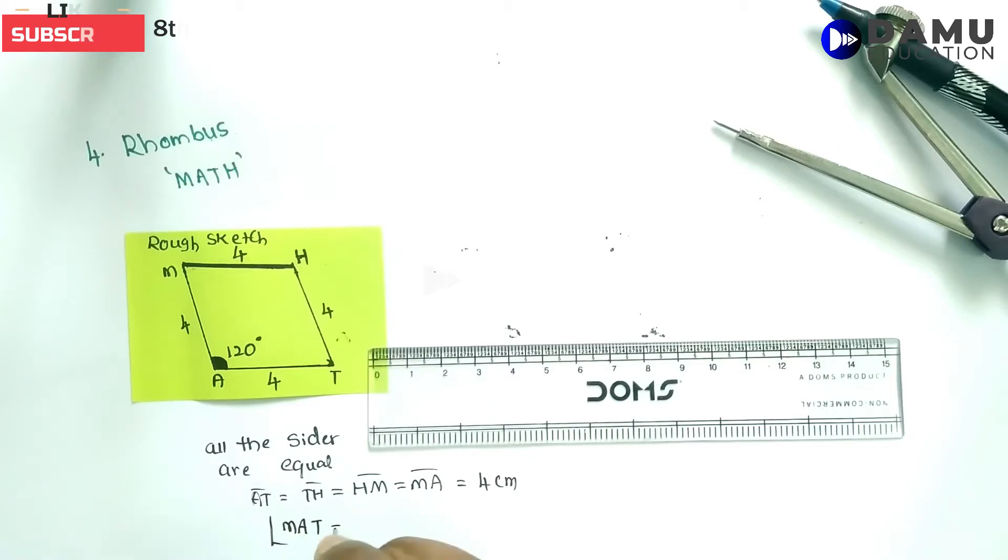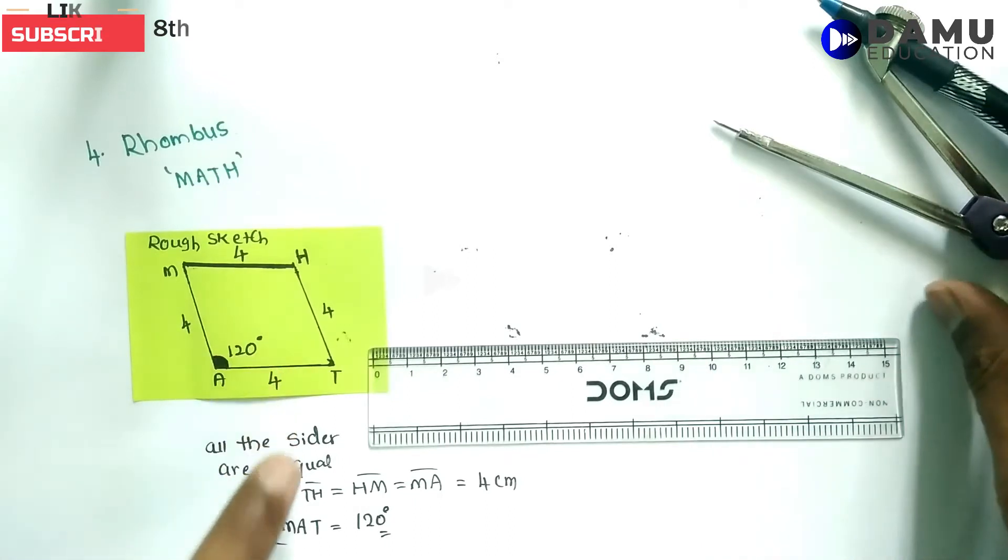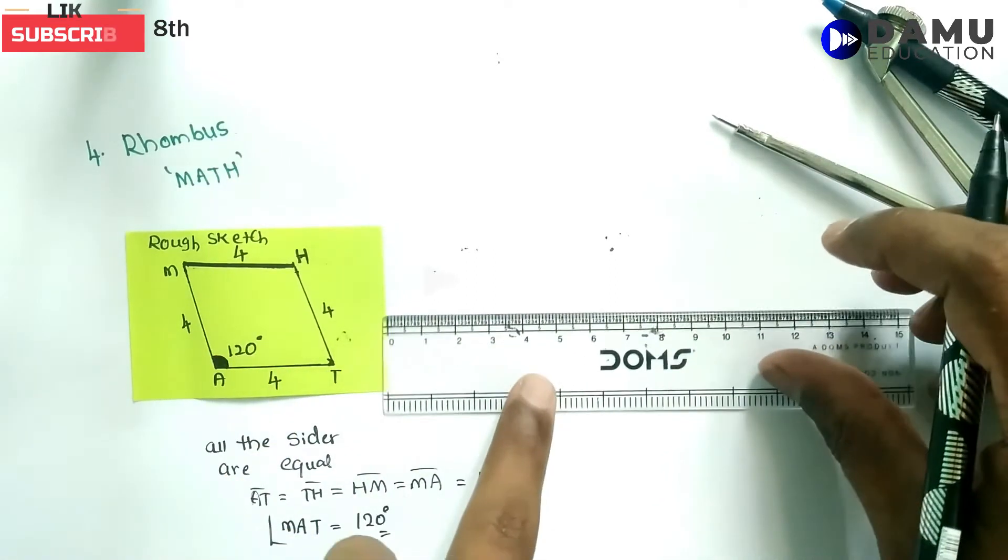We're given that angle MAT equals 120 degrees. In a rhombus, opposite angles are also equal, like in a parallelogram.